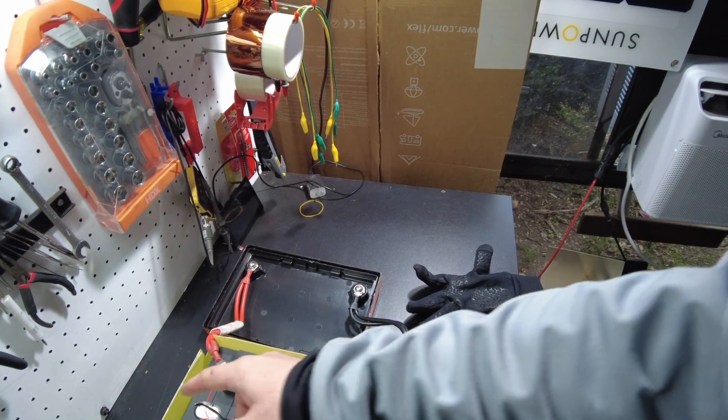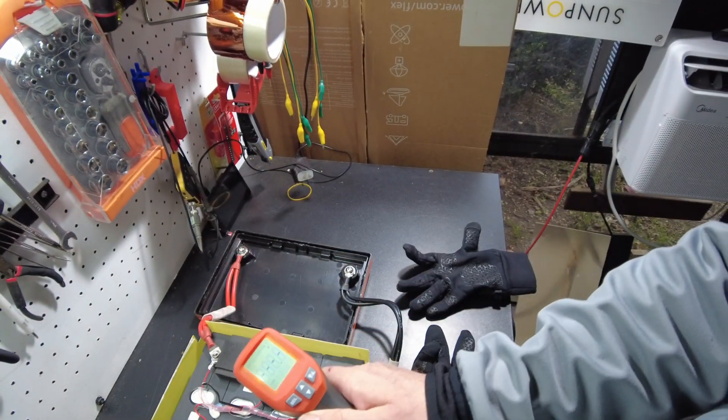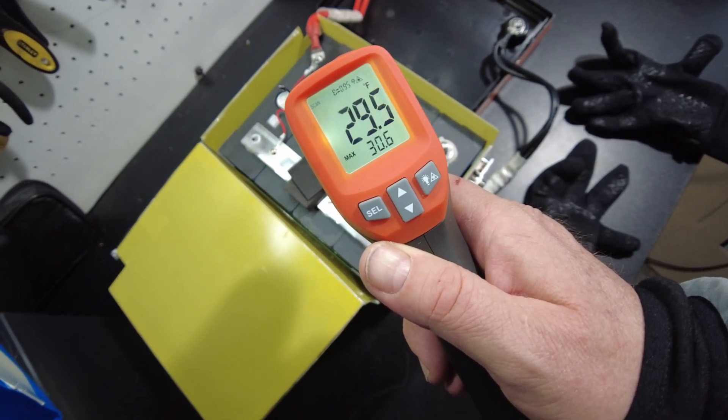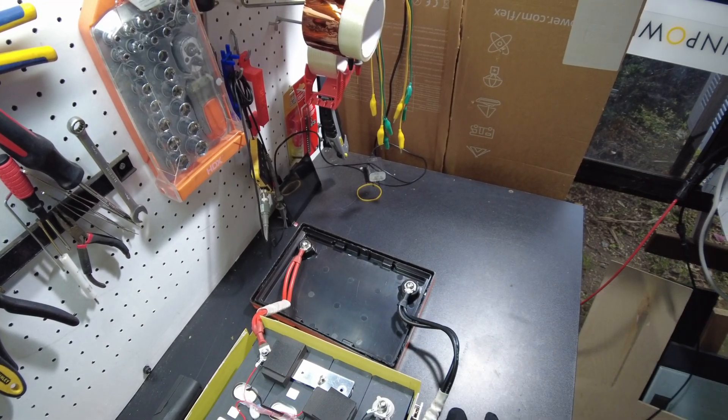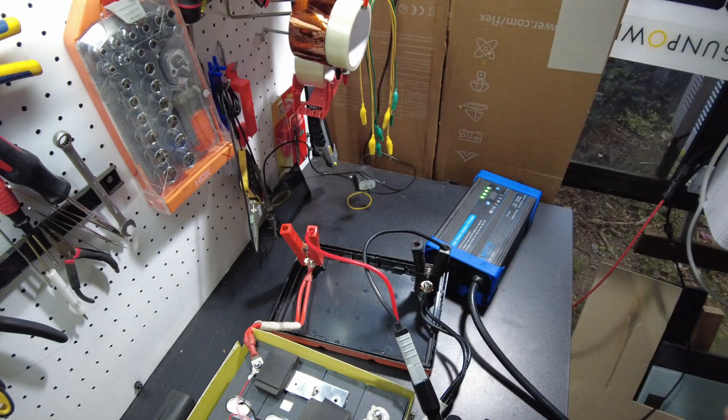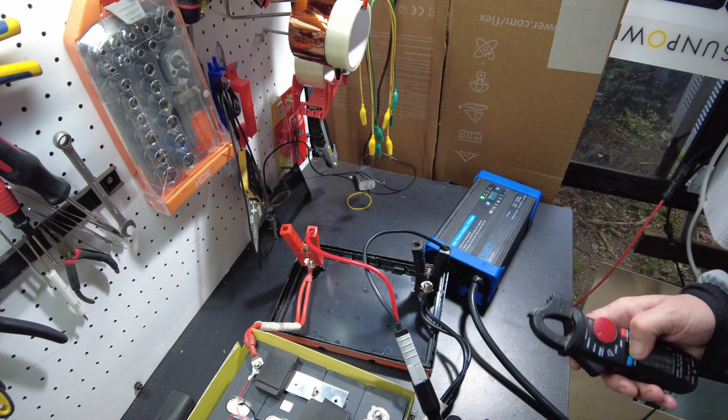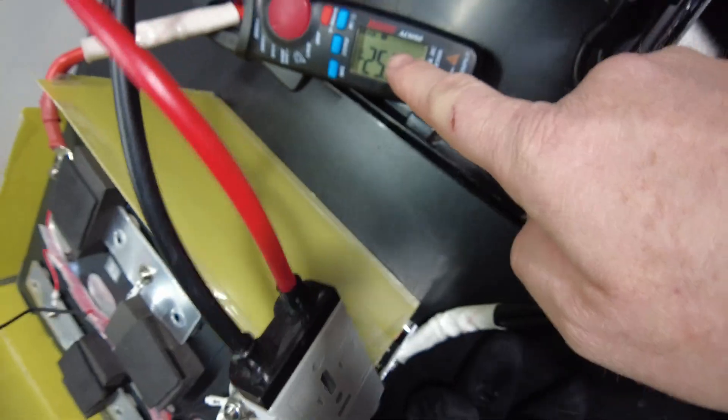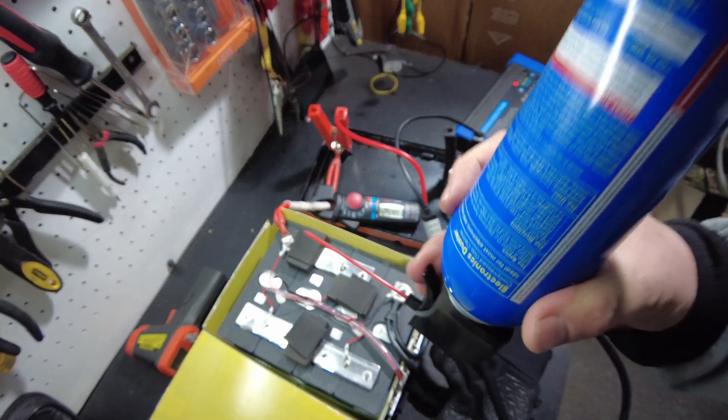Alright so we're going to hook up a charger and then see if we can freeze this. It might be cold enough already out. Let's see here. It's already 29.5 Fahrenheit. So it may already be shut off just because it's cold outside. Okay so we are charging actually. So we got 25 amps going in. Alright so let's hit it with a duster and see if it stops.